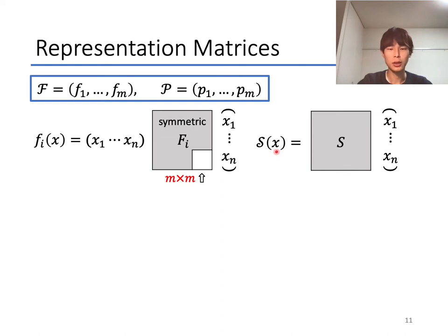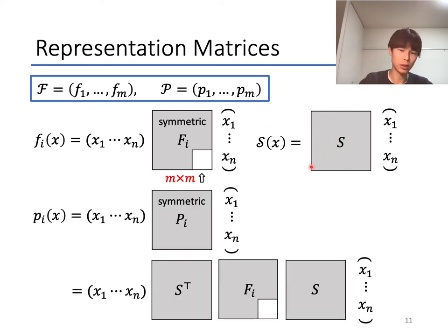The linear map S is also represented by an n times n matrix S, like this. And furthermore, the quadratic polynomial p_i of the public key P is represented by an n times n symmetric matrix P_i. And this P_i is obtained by S^T F_i S from the equation P equals F composed with S.